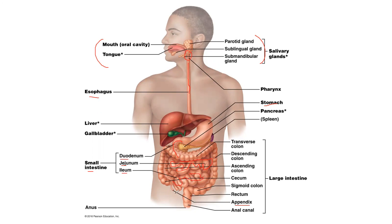We have the appendix, which is a blind sac on the large intestine. The very beginning of the large intestine is the cecum, and then there are four main portions: the ascending, transverse, descending, and sigmoid colon. It also includes the rectum and the anus.